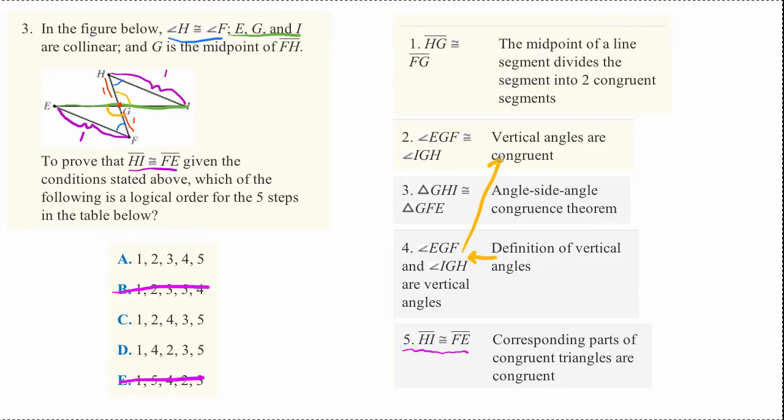And this tells us that four must come before two in our proof because two depends on something we proved in four.